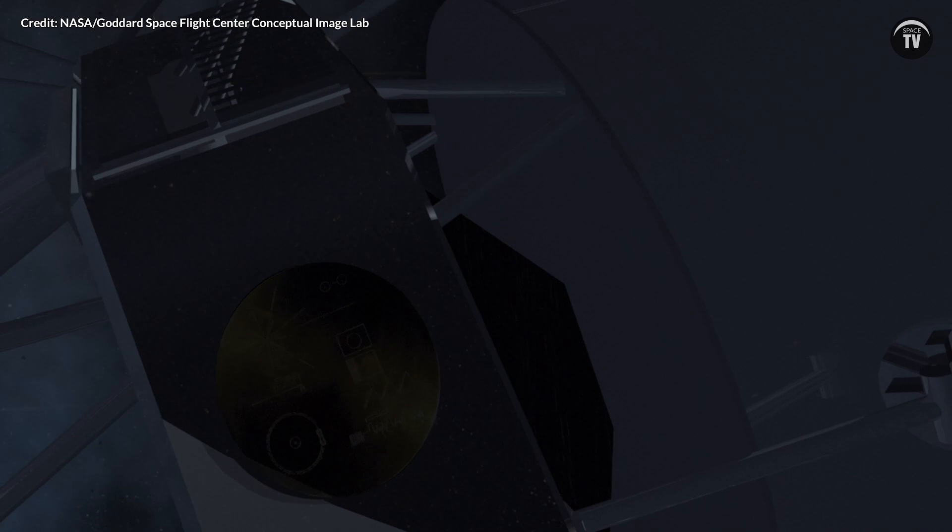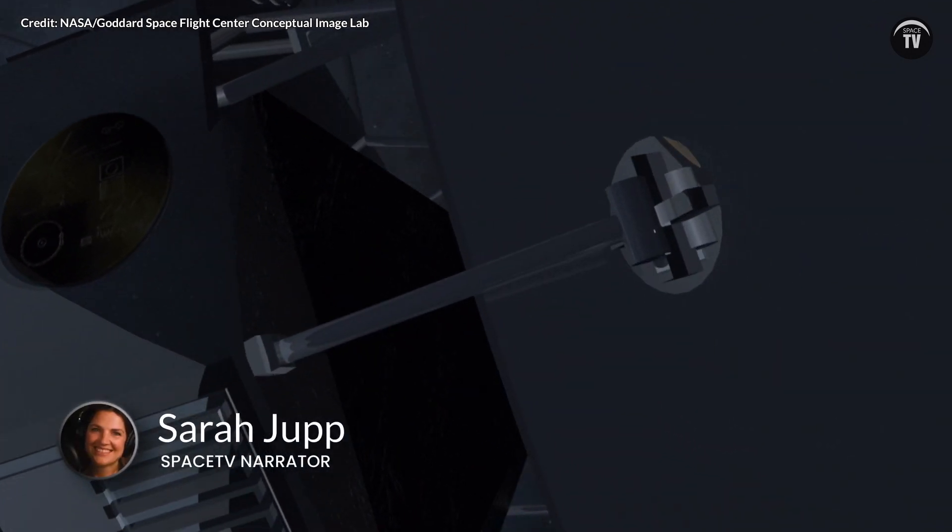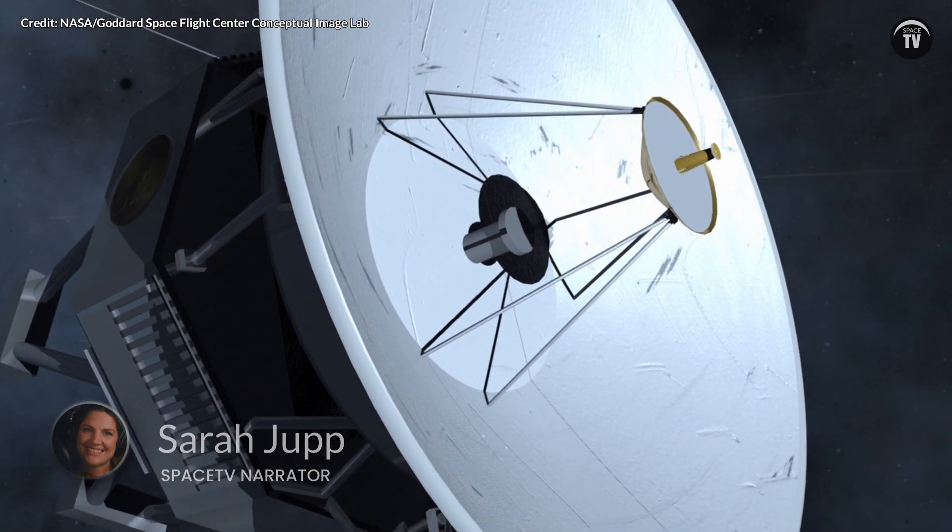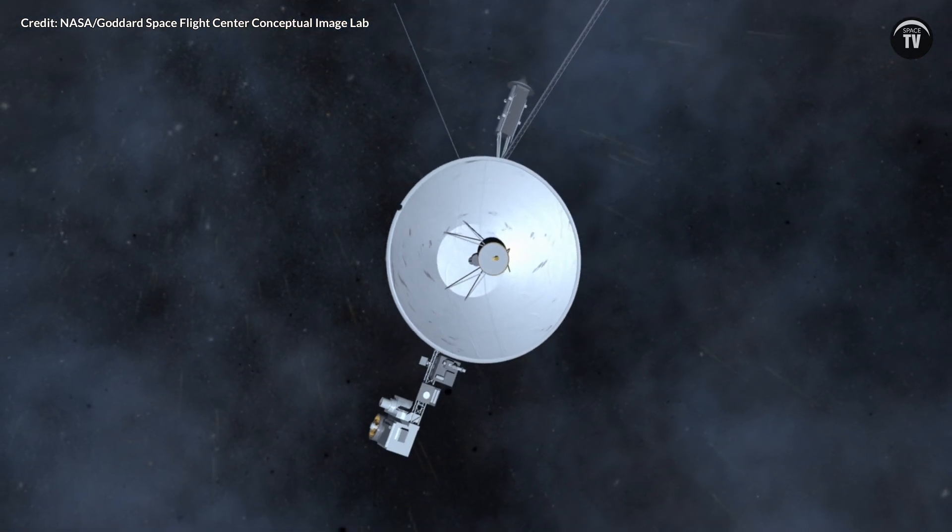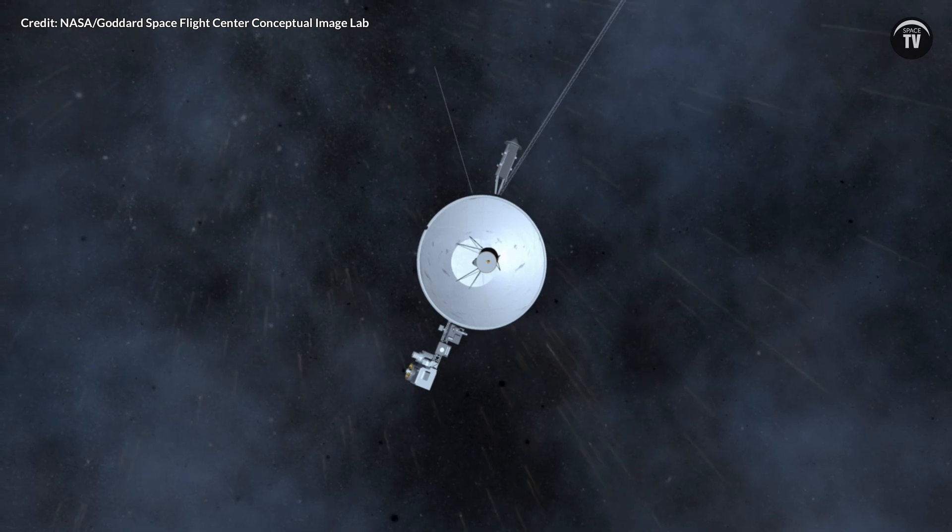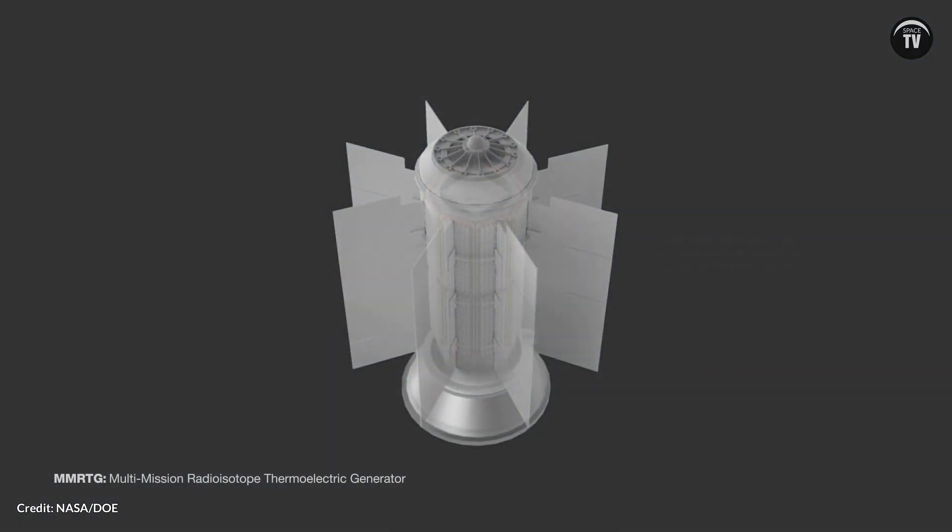All spacecraft rely on power sources to function, communicate and navigate. Radioisotope power systems get their power from radioactive atoms that release heat as they undergo radioactive decay.